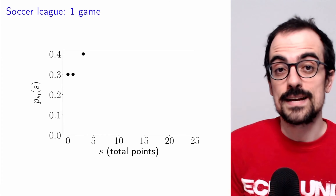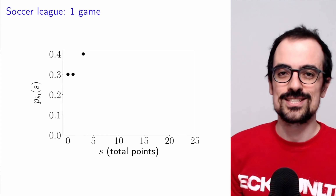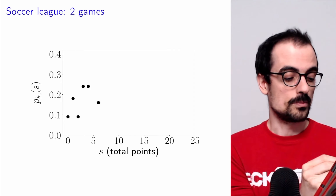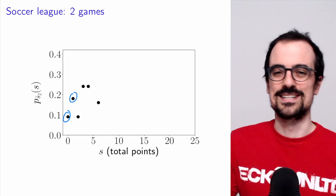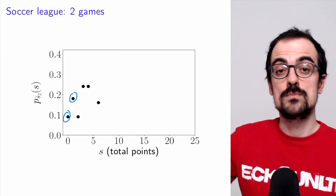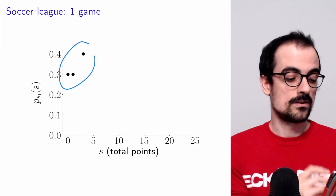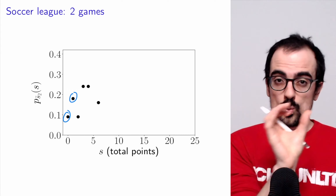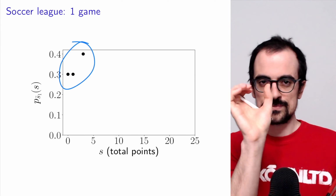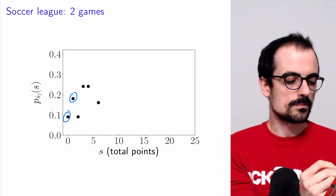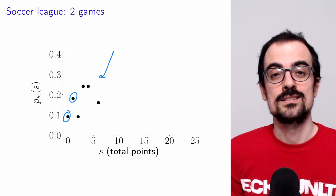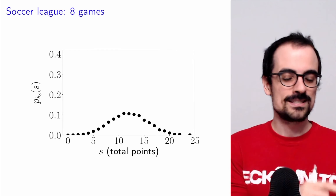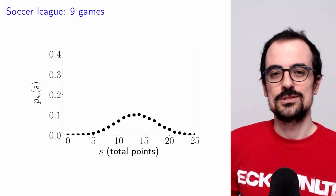Let's look visually at the effect of repeated convolution in our soccer example. This is the PMF for one game. For two games we computed P(S2=0)=0.09 and P(S2=1)=0.18. When we continue convolving the single-game PMF over and over, the effect is very interesting. We're essentially doing a kind of weighted average — taking the PMF and shifting it on top, computing weighted averages. This has a smoothing effect, and for four, five, six, seven, and eight games, the distribution smooths out into something that looks very Gaussian-like.